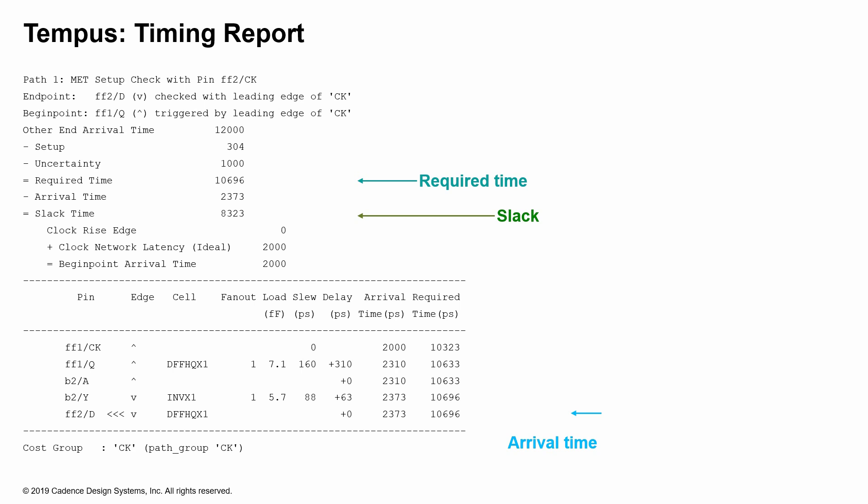In the example here, it is a Tempus sign-off timing report, which looks slightly different from some of the other reports. So it is important to identify all the pieces in this format as well.